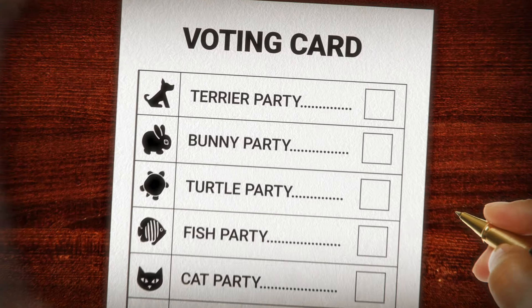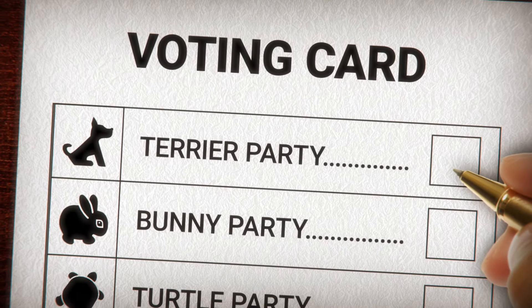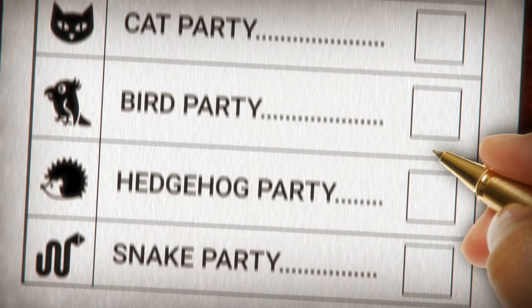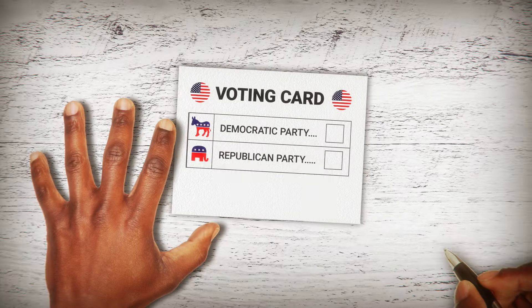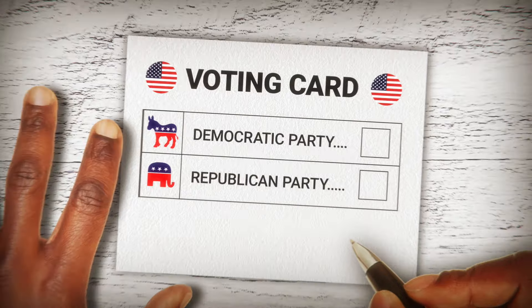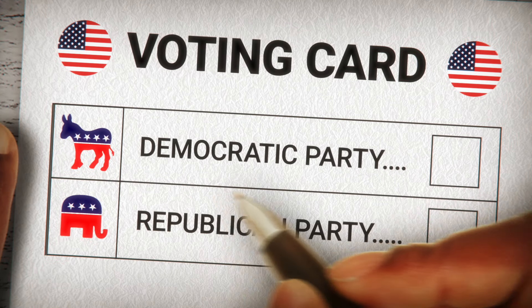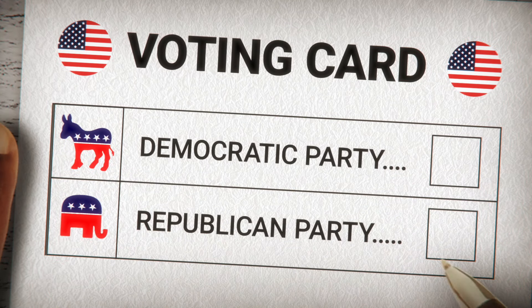Unlike other democracies around the world, where people can vote for political parties representing many different interests, the United States is essentially a two-party system, with the Democratic Party and Republican Party dominating most elections.